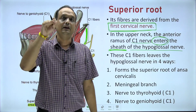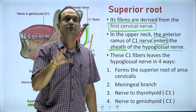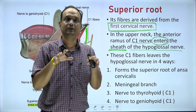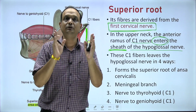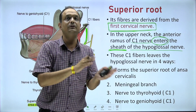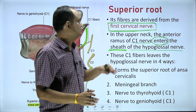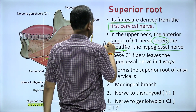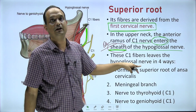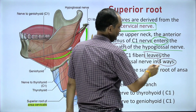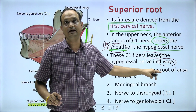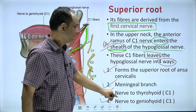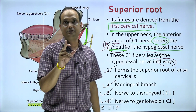The branches of C1 enter into the sheath of the hypoglossal nerve. As the hypoglossal nerve approaches different areas, the branches of C1 leave the sheath. There are two different sources: one source is from the brain for the hypoglossal nerve fibers, and one source is the C1 anterior ramus. In the upper part, C1 nerve fibers enter into the hypoglossal nerve sheath. These C1 fibers then leave the hypoglossal nerve in four ways: they may form the superior root of ansa cervicalis, form the meningeal branch, give a nerve to thyrohyoid, or give a nerve to geniohyoid.